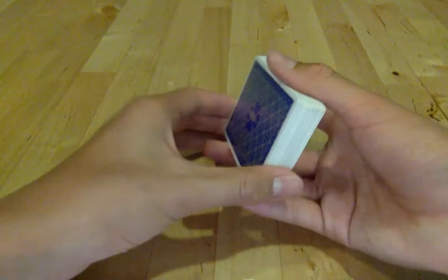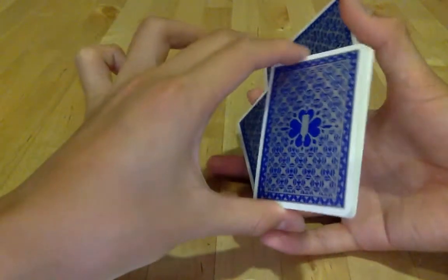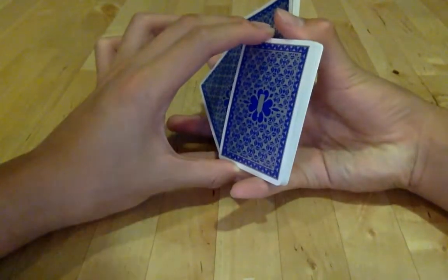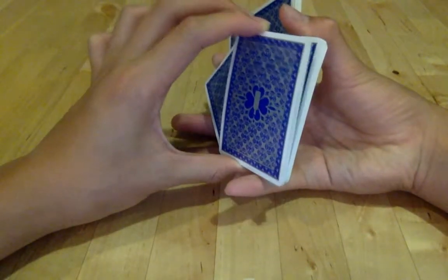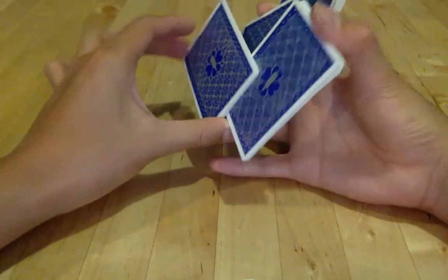Once you are at this stage, you are going to move back, put this deck here, and the next thing you are going to do is break in half. Once you have broken it in half, you are going to twist it back here.